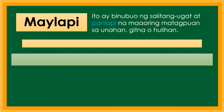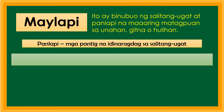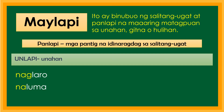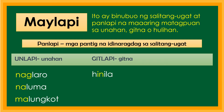Ngayon, dumako naman tayo sa may lapi. Ano ba ang may lapi? Ito ay binubuo ng salitang ugat at panlapi na maaaring matagpuan sa unahan, gitna, o hulihan. Ang panlapi ay mga pantig na idinaragdag sa salitang ugat. May tatlong uri ng panlapi. Una ay ang unlapi — ito ay ginagamit sa unahan ng salitang ugat. Halimbawa: naglaro, naluma, malungkot. Ang gitlapi naman ay ginagamit sa gitna ng salitang ugat. Halimbawa: hinila, kumain, tumakbo.